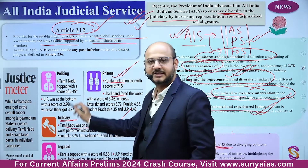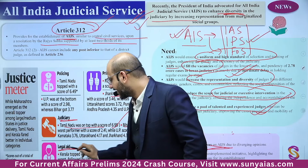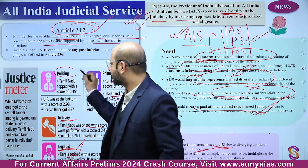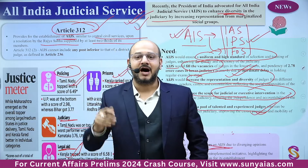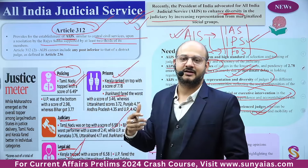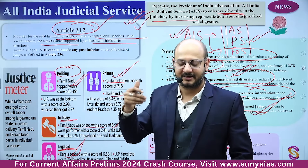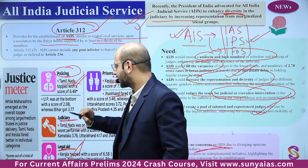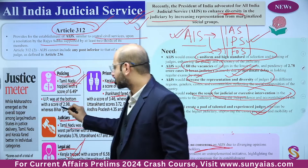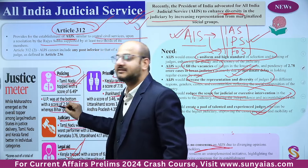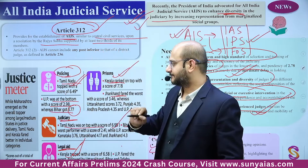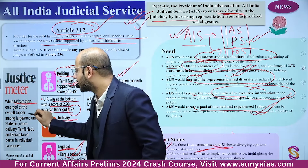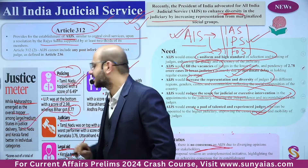In the Justice Meter, Tamil Nadu topped the judiciary category with a score of 6.99, while Bihar performed worst. For legal aid, Kerala topped. For policing, Tamil Nadu topped — though Maharashtra police cadre is popularly preferred — while UP was at the bottom, with Bihar ranking better than UP in policing. Overall, Maharashtra emerged as the topper among large and medium states in justice delivery.